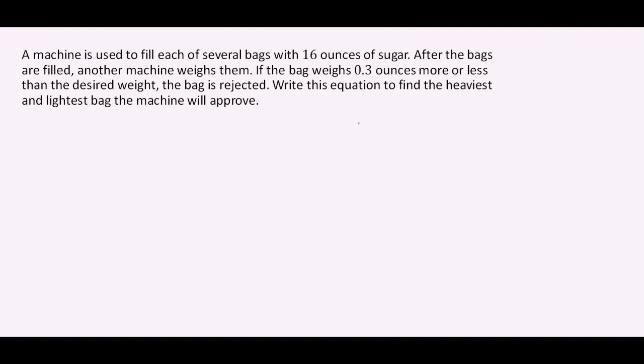Let's try that together. A machine is used to fill each of several bags with 16 ounces of sugar. After the bags are filled, another machine weighs them. If the bag weighs 0.3 ounces more or less than the desired weight, the bag is rejected. Write the equation to find the heaviest and lightest bag the machine will accept.